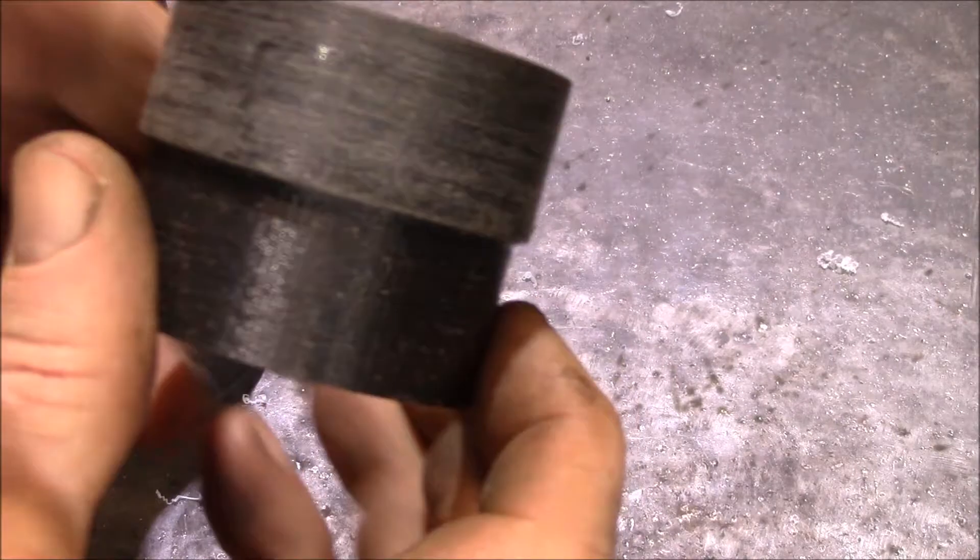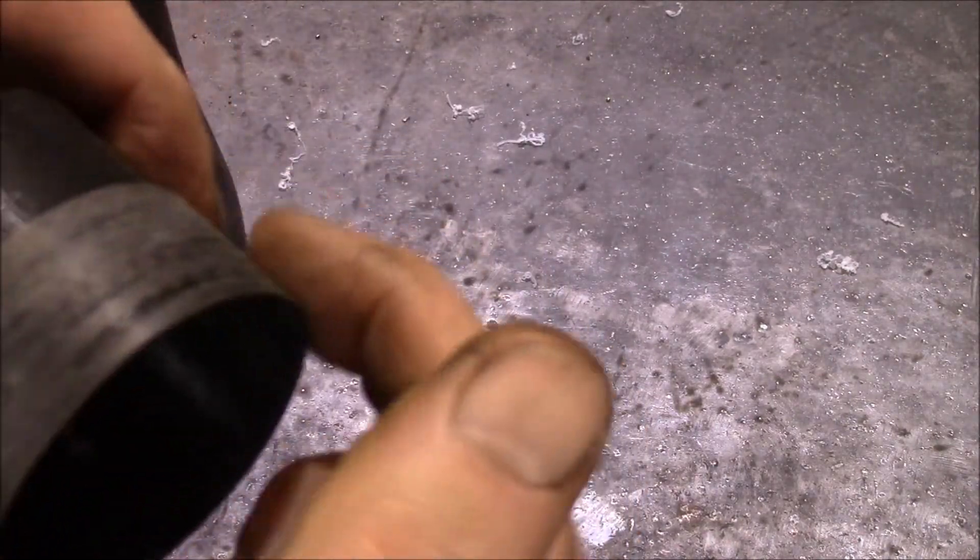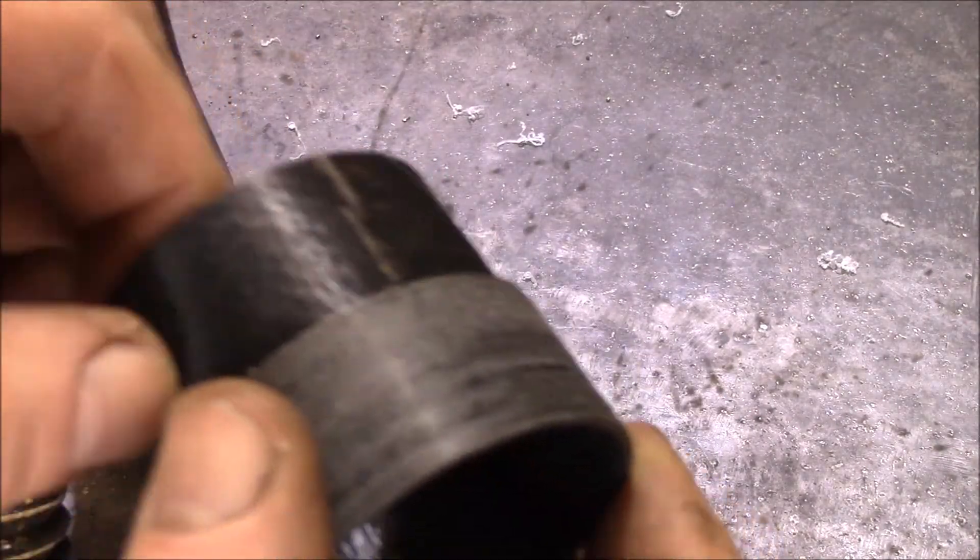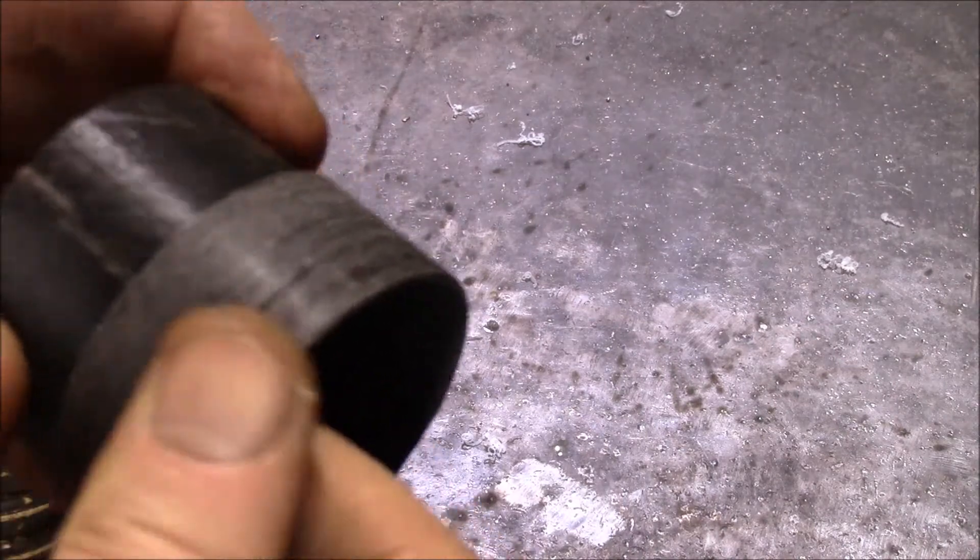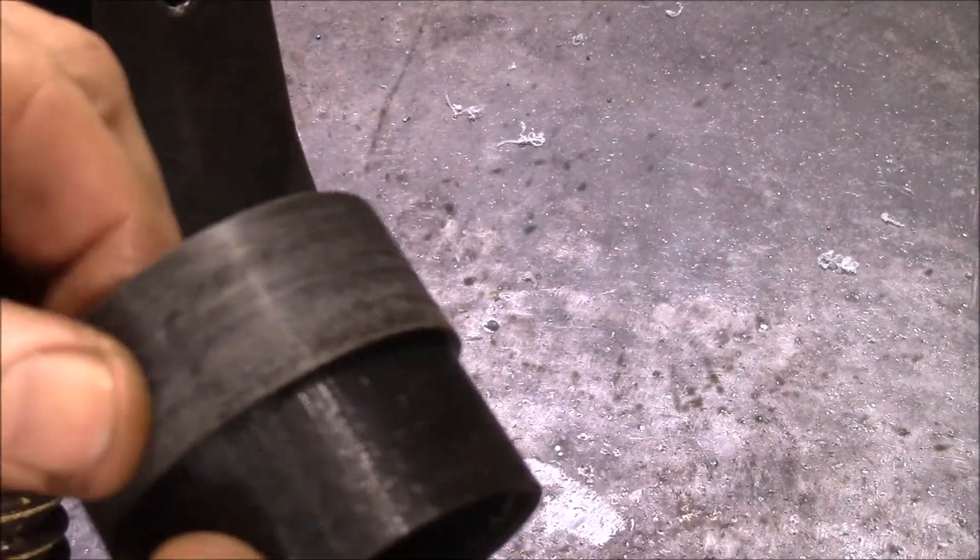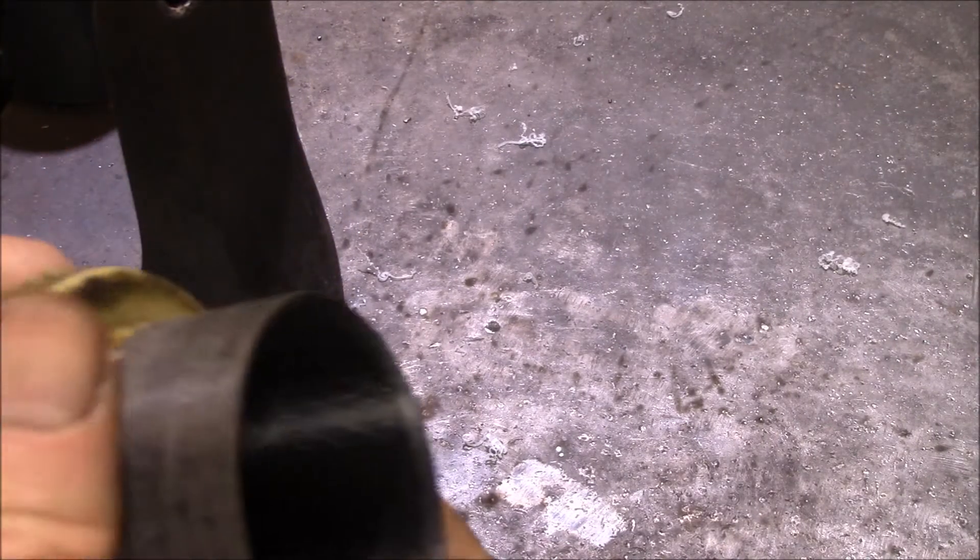And then the other thing I did was chuck this up in my lathe and just sanded this rough printed surface, sanded it down kind of smooth. And now that fits in there, nice tight fit. So I figured it was easier to make this just a little bit bigger and then make that a little bit bigger to fit, rather than trying to get the exact size to print out.